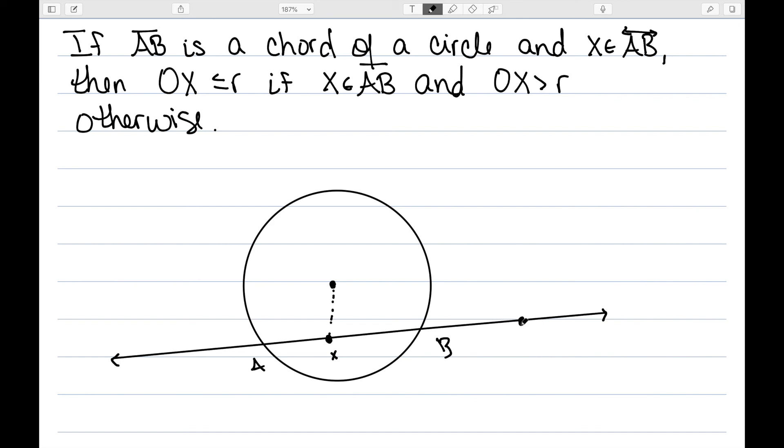However, if X is not on the segment AB, then it's outside the circle. It's exterior. This distance is larger.